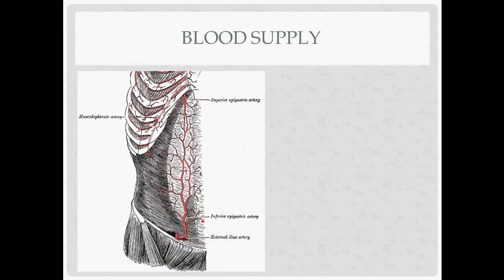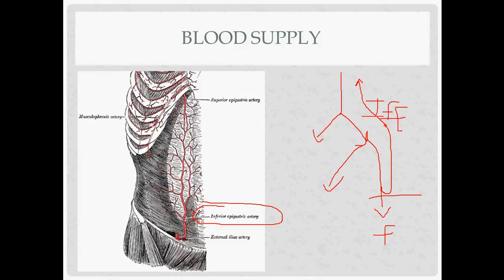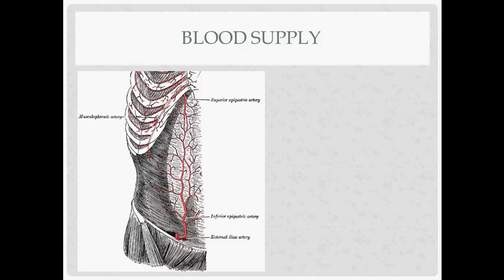For blood supply, the most important supply to the anterior abdominal wall is from the inferior epigastric arteries. The abdominal aorta divides into the common iliacs, which divide into the internal and external iliacs. After the inguinal ligament, the external becomes the femoral artery. Just above the inguinal ligament, it gives off the inferior epigastric artery.